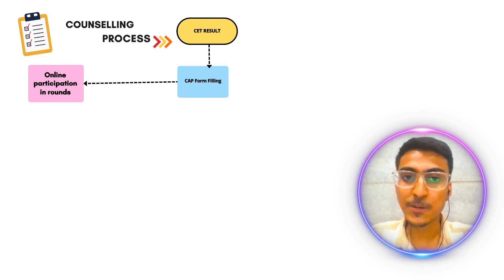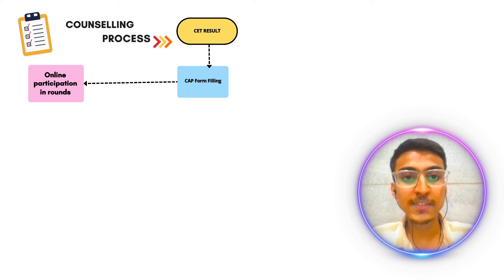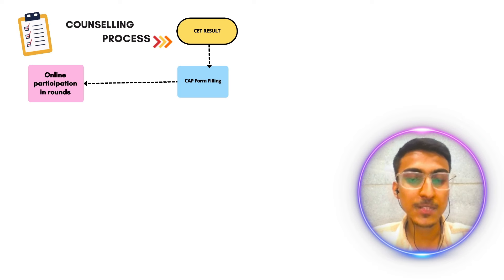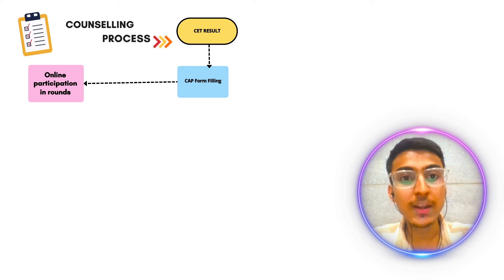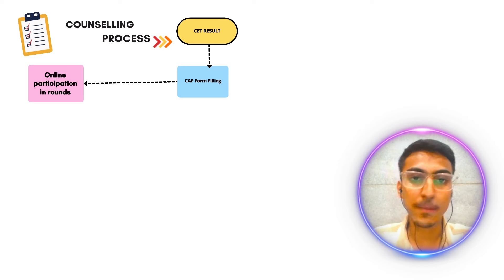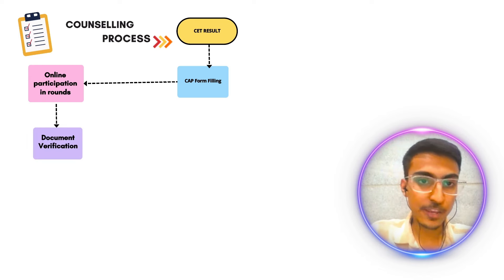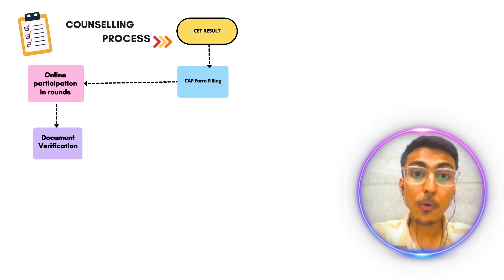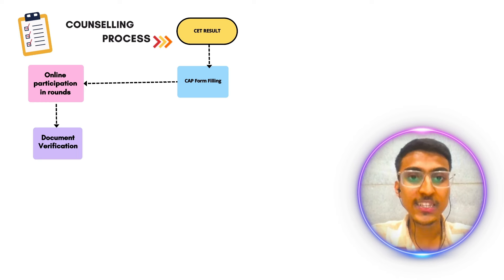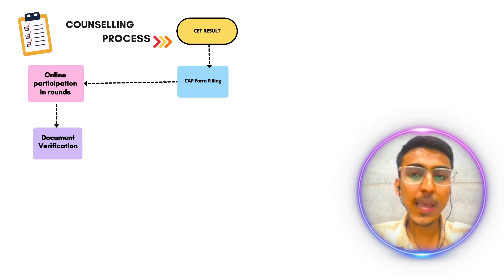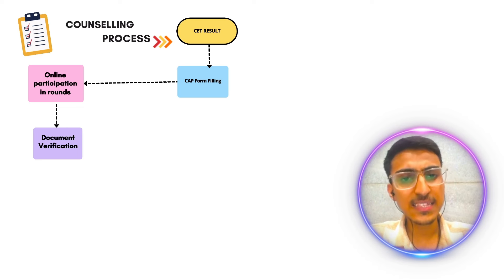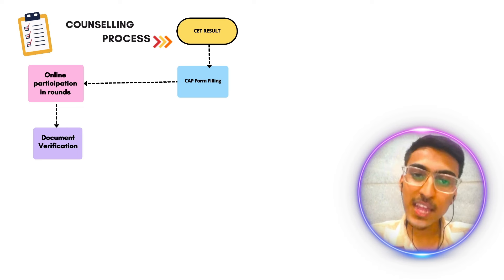इसके बाद आपका online participation round शुरू होता है। Online participation में जब आपने online form भरा और सारे documents submit किए — उसमें 12 boards का result submit होता है, फिर आपका MHCAT का result submit होता है। अगर आपको All India seats का admission लेना है तो JEE का result भी आप submit कर सकते हो। फिर आपका document verification होता है — जो भी documents आपने online submit किए हैं, उनको आपको in-center जाकर physically check करवाना पड़ता है। यह process online भी होती है, offline भी होती है, लेकिन I recommend कि आप offline verification के लिए जाओ — offline verification एक से 2 घंटे में हो जाता है।